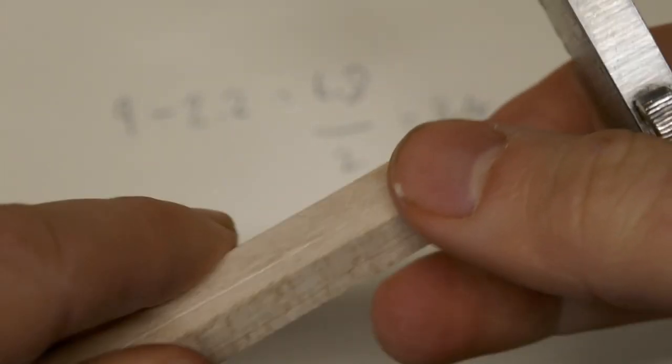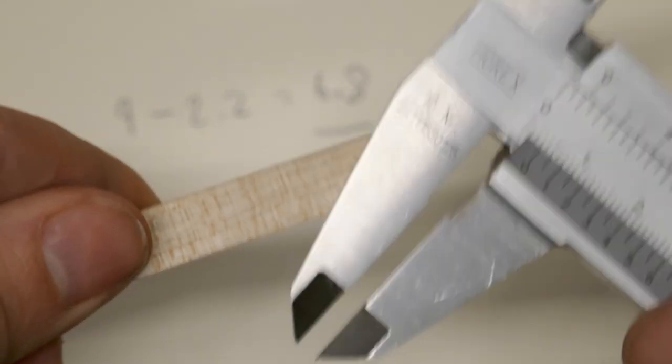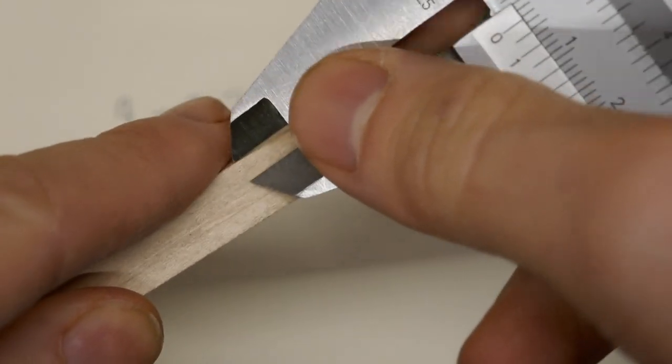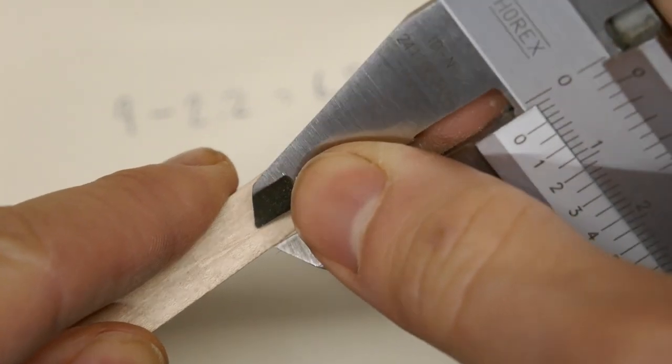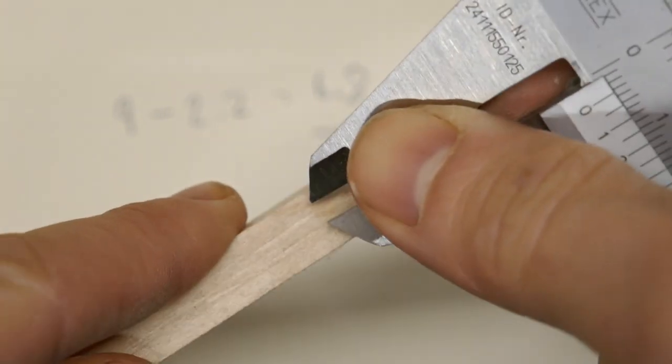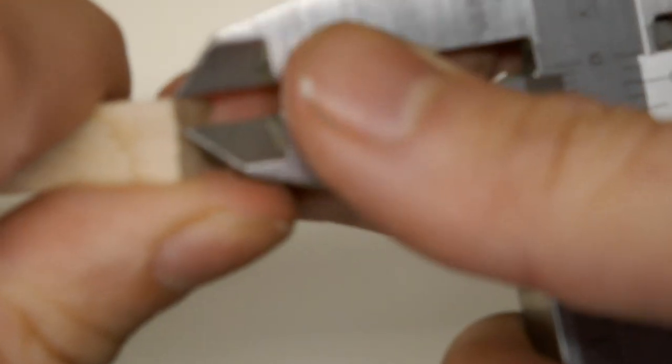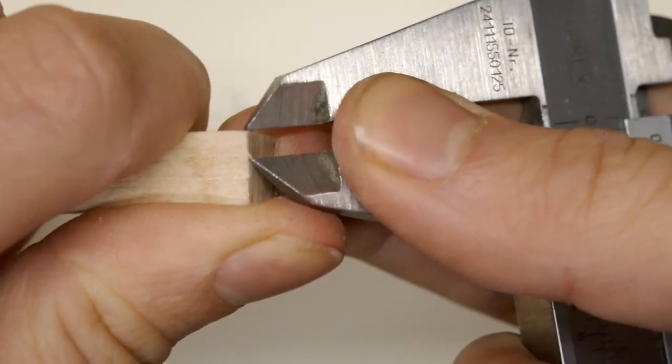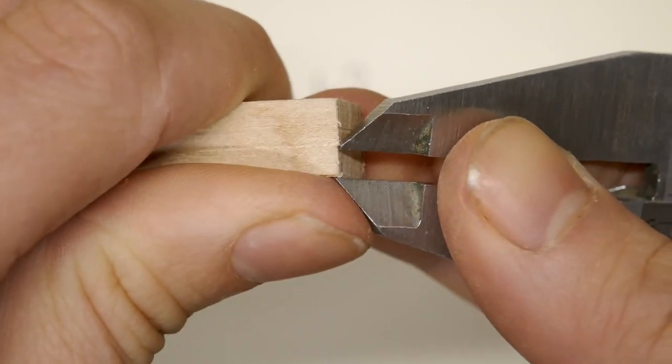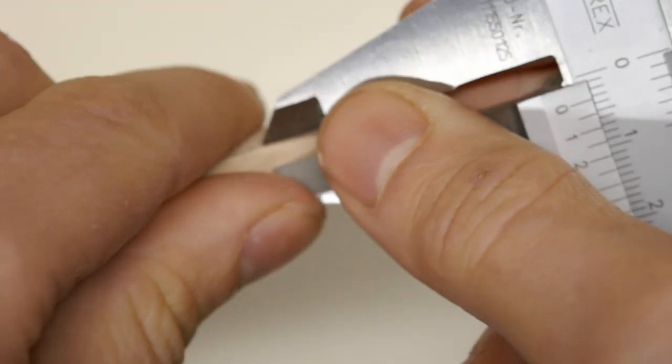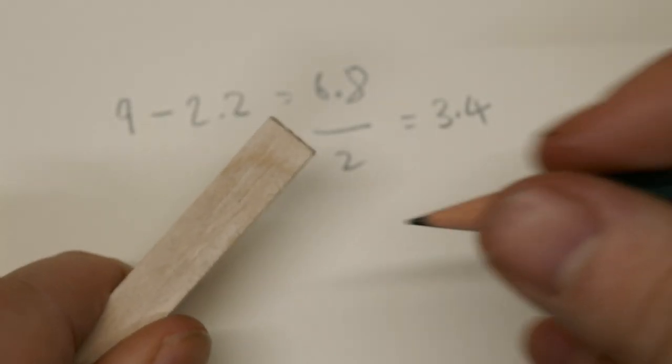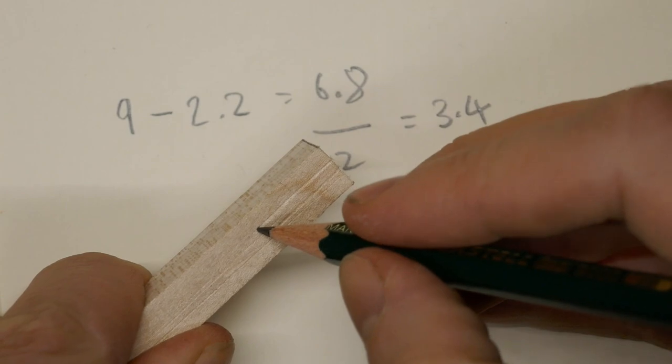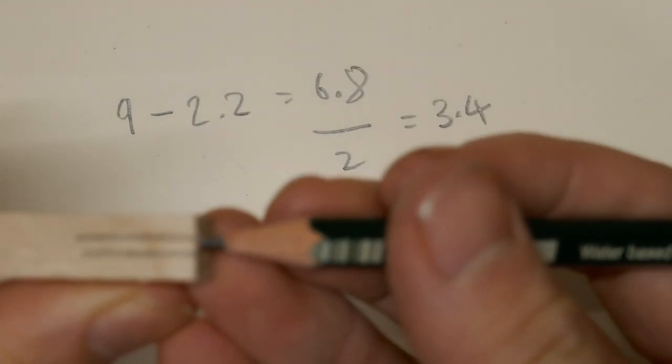So we've set our vernier calipers to 3.4, like that. Lock them off. Take our piece of maple. These are going to be the sides. This is going to be the top. So we'll drag along there like that, and on the other side. And now we know we have a 2.2mm tail marked out. We need to mark it out on the end as well. And it doesn't hurt to mark it on the bottom, although it's not entirely necessary there.